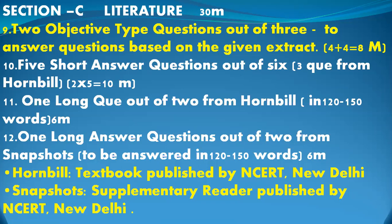Question 11 is a long question. Two long questions will come from Hornbill; out of two, you have to attempt any one. Word limitation is 120 to 150 words, and it will be six marks. Question 12 will also be a long question — it will come from Snapshots. Again, word limitation is 120 to 150 words, and it is six marks. So one long question you attempt from Hornbill and one from Snapshots.